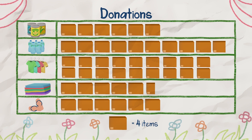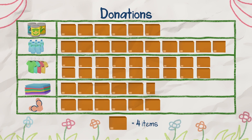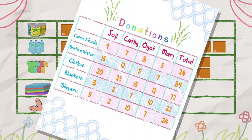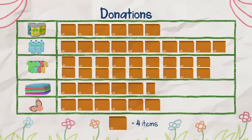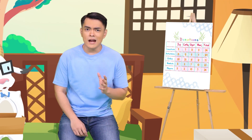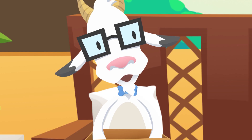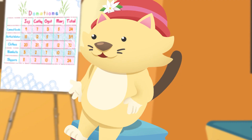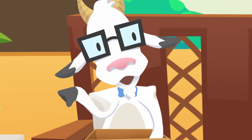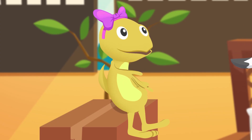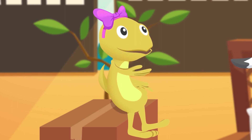Thank you for your help. Always remember to put the title and the labels needed for the tables, graphs, and pictographs that you make. Based on these graphs, it seems we need more canned goods. Yes, I think we can add more of that. Maybe we can ask our neighbors if they want to give something. But haven't they donated to the barangay already? Yes, they did.